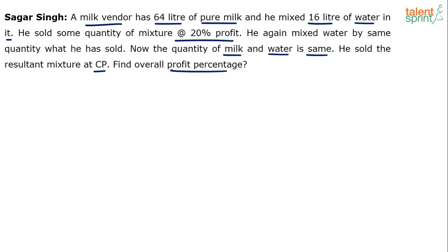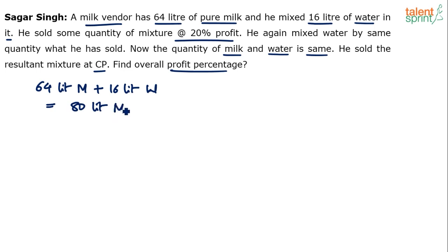So we'll do it in a step-by-step process to understand the whole thing. Don't go by the length of the explanation — I want to give a detailed explanation of the whole process. So: 64 liters of milk plus 16 liters of water gives 80 liters of mixture. He sold some quantity at 20% profit. We don't know the quantity yet, so first let's find out how much was sold — that's very important. Unless we know how much mixture was sold, we can't do the overall profit calculation.